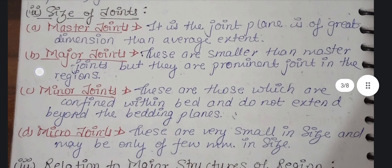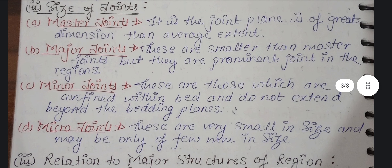Let's move on to the size of joints. What is the classification by size? First, master joints — these have the greatest dimension. Then major joints, which are smaller than the master joints but bigger than the minor joints.